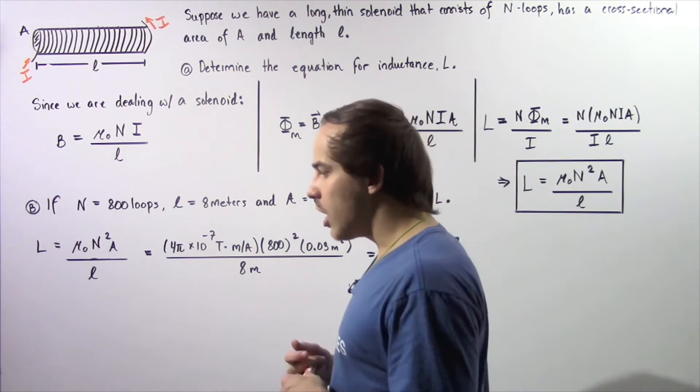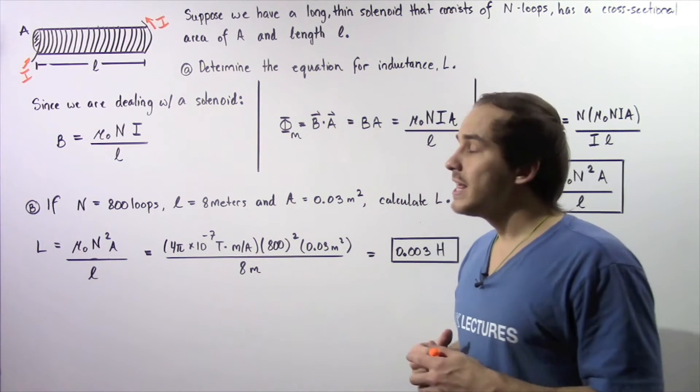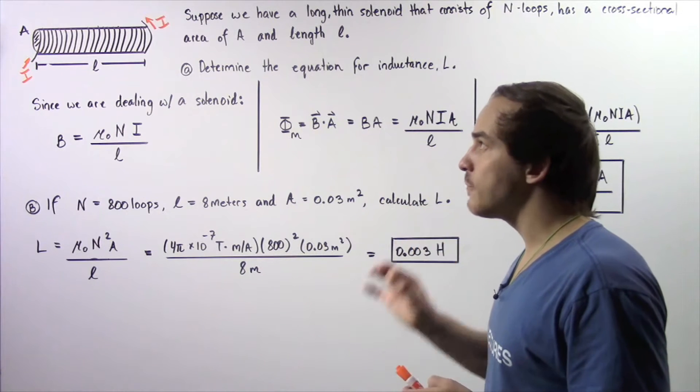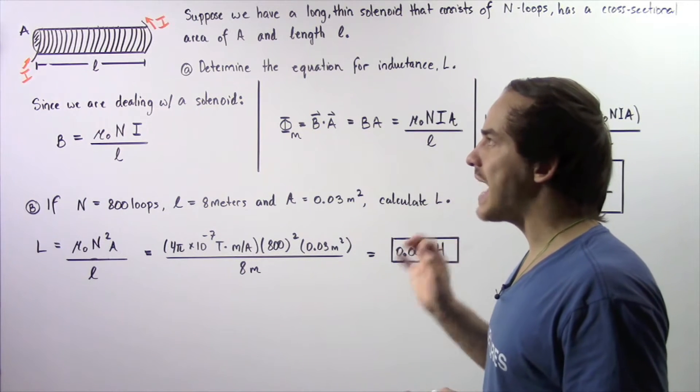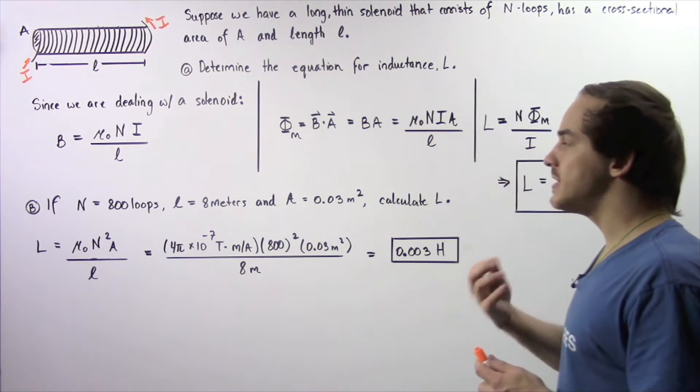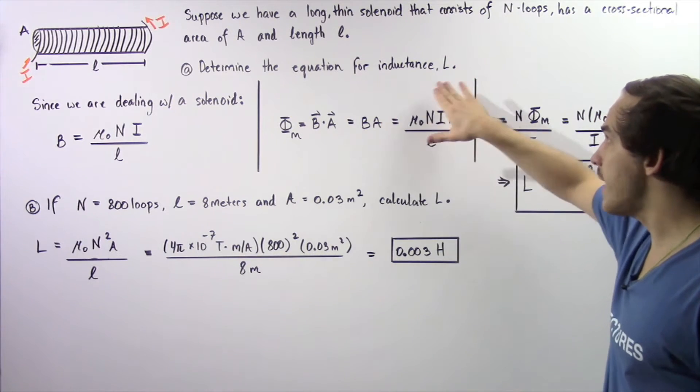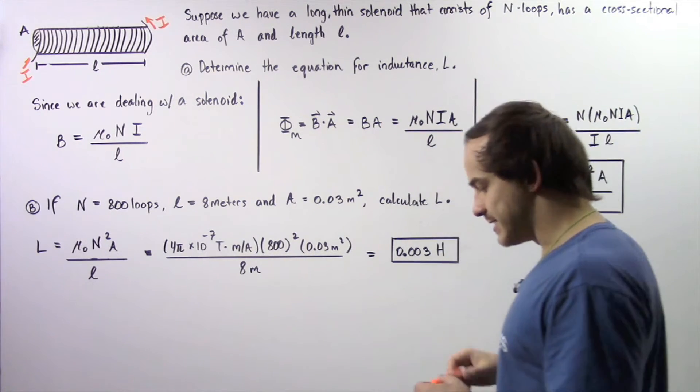Now by Faraday's law of electromagnetic induction, that will imply that an induced EMF will be created within our loops of wire. And that is known as self-inductance or simply inductance given by L. So we want to determine the equation for this quantity.